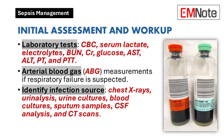A standard evaluation for suspected sepsis includes several laboratory tests: complete blood count, serum lactate, electrolytes, blood urea nitrogen, creatinine, glucose, aspartate aminotransferase, alanine aminotransferase, prothrombin time, and partial thromboplastin time. If respiratory failure is suspected, arterial blood gas measurements should also be taken.